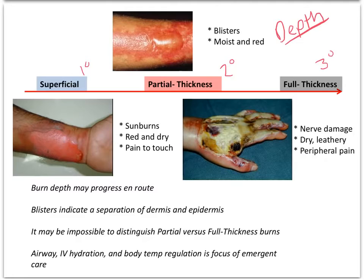A superficial burn is a sunburn — plain and simple. It's usually red and dry skin, very painful to touch. Every now and then you may get something like you see here in the picture. It doesn't look very dry, but I promise you it is.